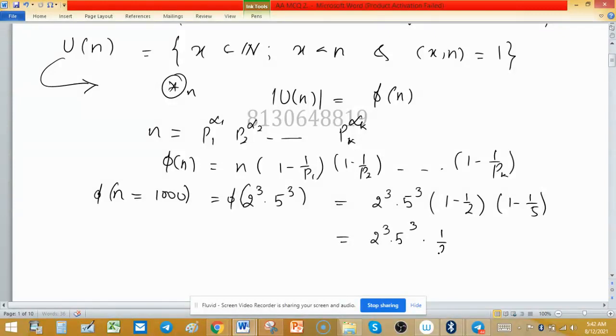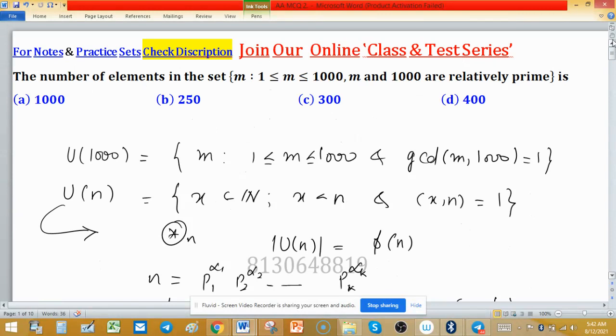We have 2² and 5² into 4, which equals 4 · 25 · 4 = 16 · 25 = 400. Now which option gives 400? Option D is correct.